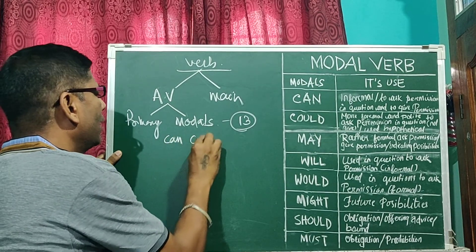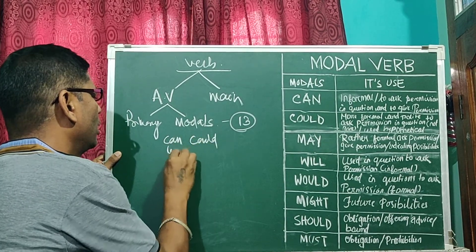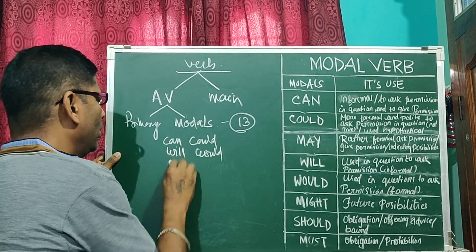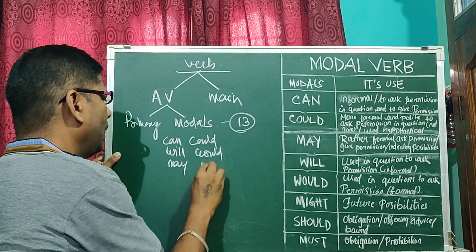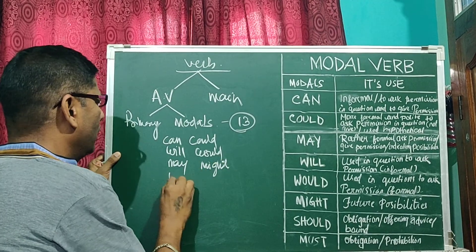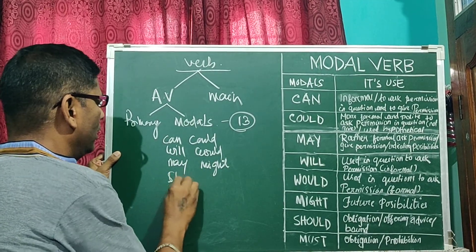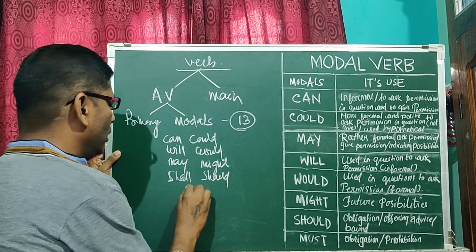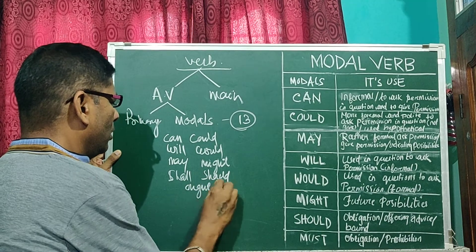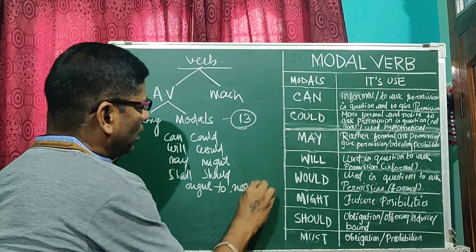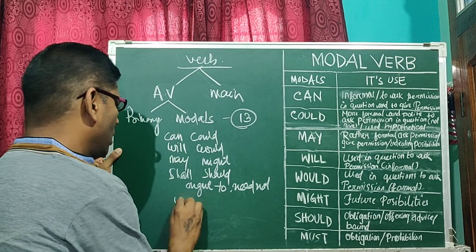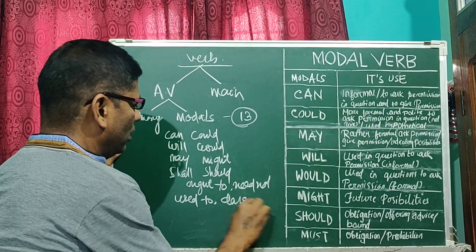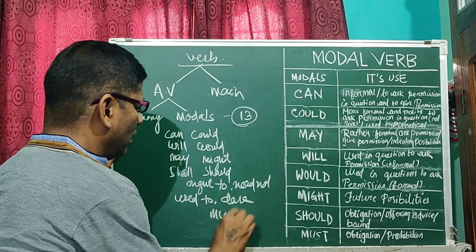The 13 modals are: can, could, will, would, may, might, shall, should, ought to, need not, used to, dare, must.